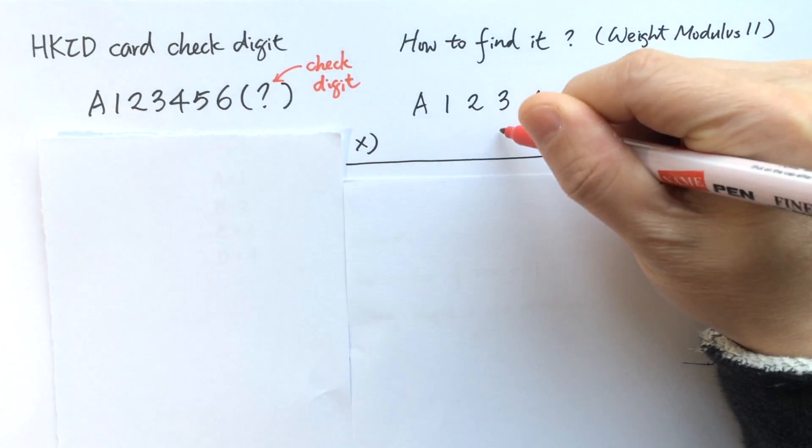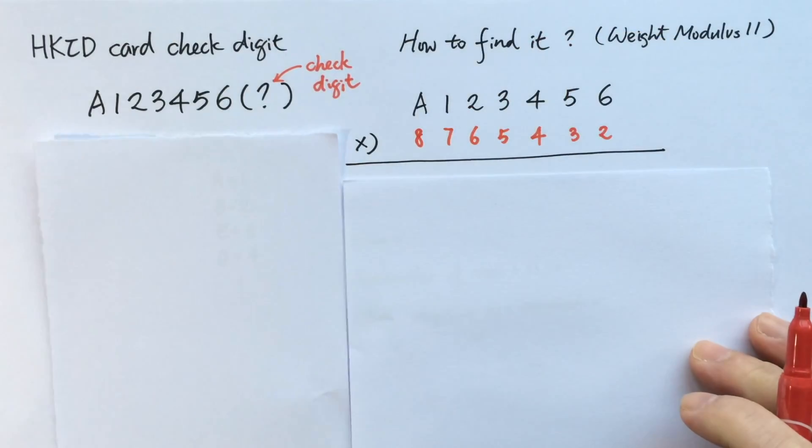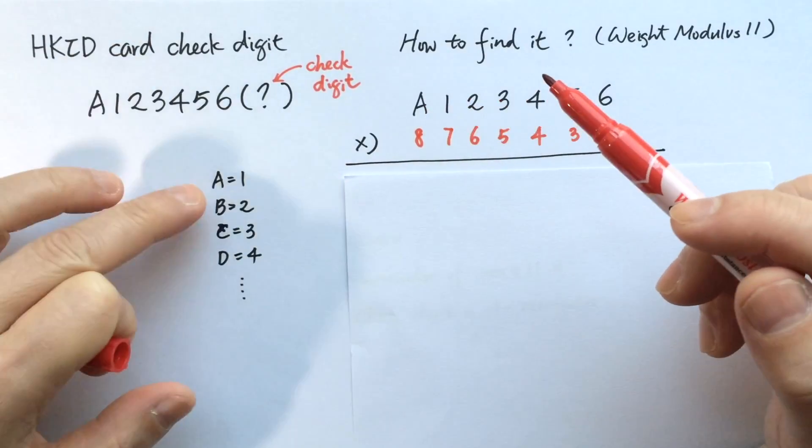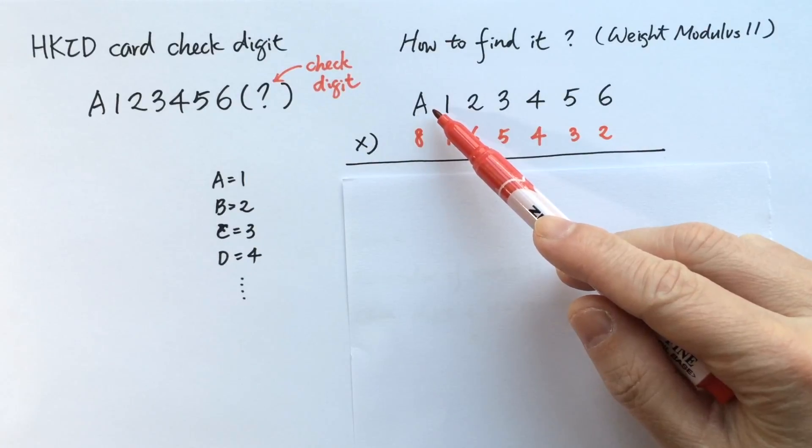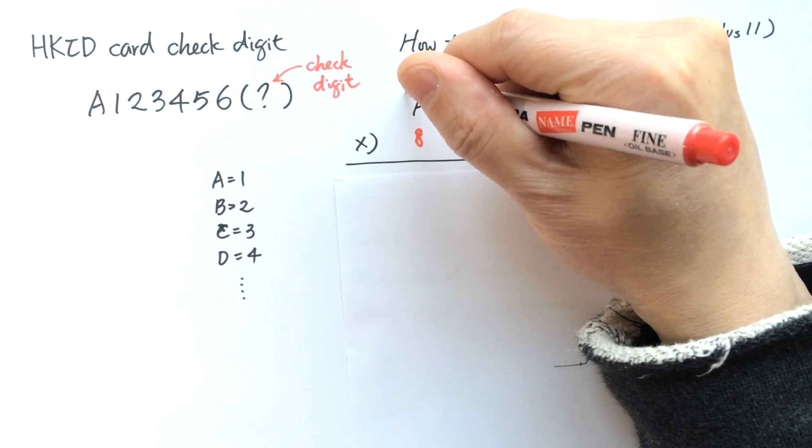So the letter A actually represents the value 1, and if your ID card begins with the letter B, then the value will be 2. So we have 1 here.